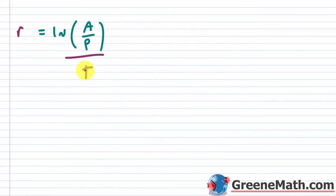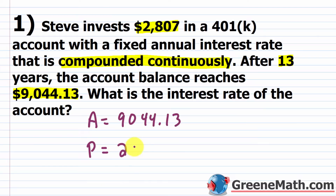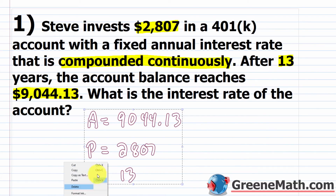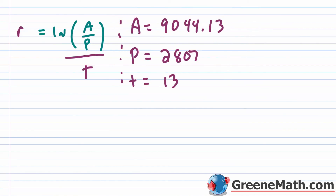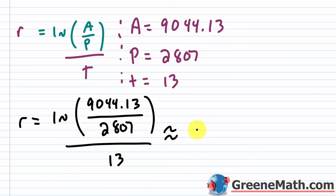Using the formula r equals ln(A/P) divided by t: A is the account balance after 13 years, so A equals $9,044.13; P is the principal, so P equals $2,807; and t equals 13. Plugging in: r equals ln(9,044.13 divided by 2,807) divided by 13. Keying this into the calculator and rounding to the nearest hundredth gives approximately 0.09, or 9%.